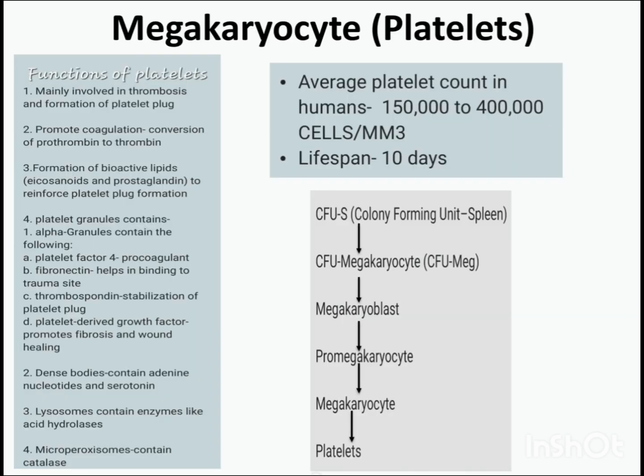Now coming to megakaryocytes and platelets. The average platelet count in humans is 1,50,000 to 4,00,000 cells per mm cube, and the lifespan of a platelet is 10 days. Synthesis starts from colony forming unit spleen, forming colony forming unit megakaryocyte, then megakaryoblast, then pro-megakaryocyte, then megakaryocyte, and finally platelets are formed.